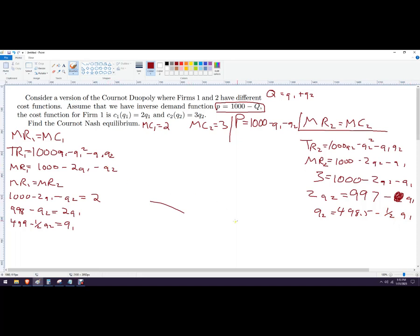It's 498.5 minus 0.5 Q1. Now I've got my two best response functions.